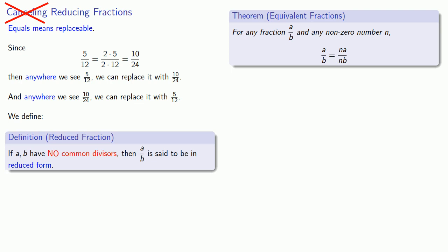And so we define reduced fractions. If A and B have no common divisors, then A over B is said to be in reduced form.